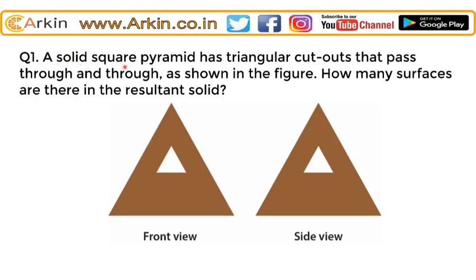A solid square pyramid has triangular cutouts that pass through and through as shown in the figure. How many surfaces are there in the resultant solid? After the cutout, what will be the number of surfaces in that solid — that is the question being asked here.